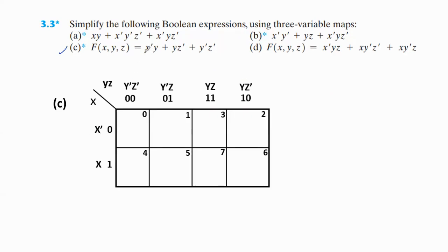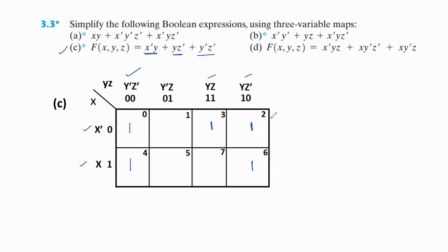Now let us take the third expression. The first term is x'y: x' is row 0, y is common in the two middle columns, so we keep 1 in those two boxes. The second term is y·z': there is no x term, so both rows are considered; y·z' means the last column, so we keep 1 in box 2 as well (box 6 already has a 1). The third term is y'z': no x term again, so both rows; y'z' means the first column — keep 1,1 there. Now, these four ones form one group (overlapping columns), and these two are adjacent, forming a second group.